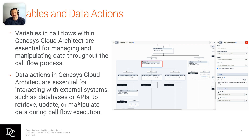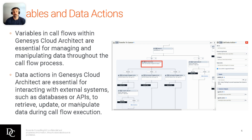Variables and data actions — we're again referencing that get-number-of-agents-on-queue data action. Variables in call flows within Genesys Cloud Architect are essential for managing and manipulating data throughout the call flow process. Data actions in Genesys Cloud are essential for interacting with external systems such as databases or APIs to retrieve, update, or manipulate data during call flow execution. A good example is your CRM system — say you have Salesforce and you'd like to do a data dip into Salesforce to pull back customer information based on their ANI that they called in with, their date of birth, or their customer number. We highlighted the get-number-of-agents-on-queue data action and the different routing you're able to do based on whether agents are on queue or not.